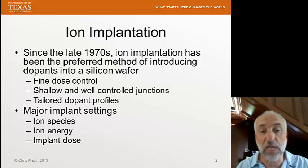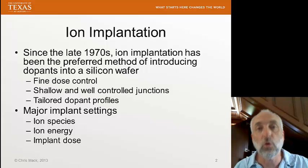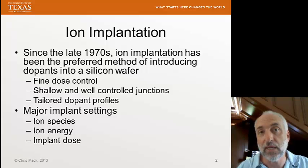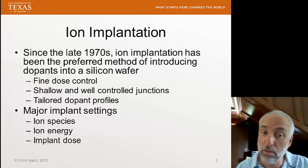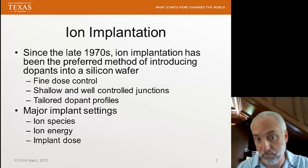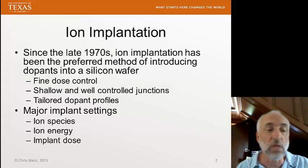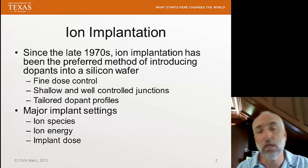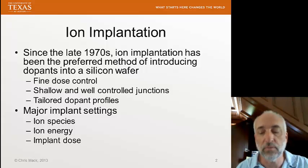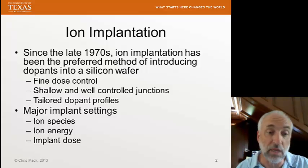The major choices we have when designing an ion implantation process are the ion species that we use, the ion energy that we choose, and the implant dose. We also have a few other important parameters, like the temperature of the wafer and the angle of the implant, which impact the process as well. But these are the main things: what type of ion, the energy, and the dose.